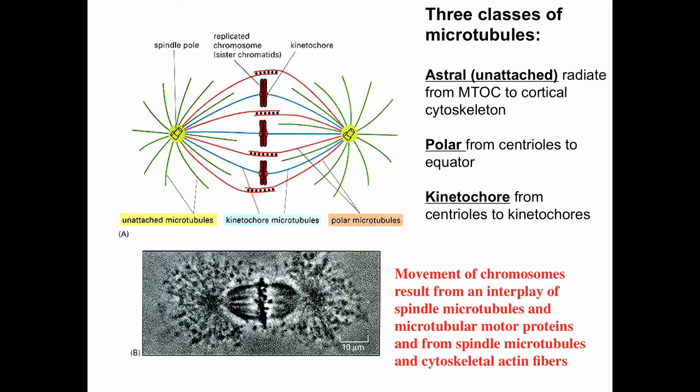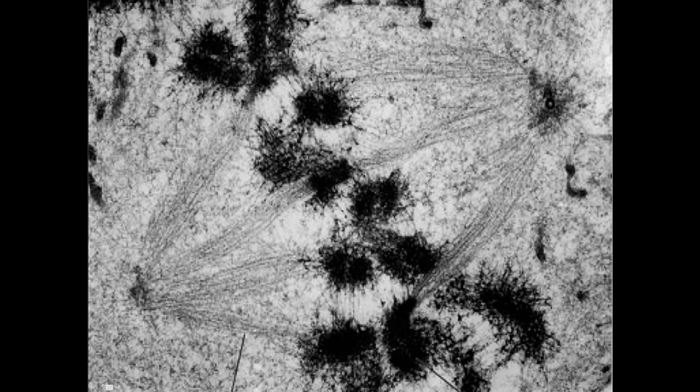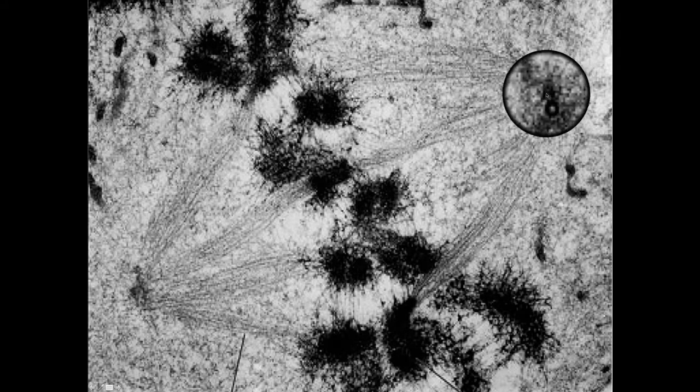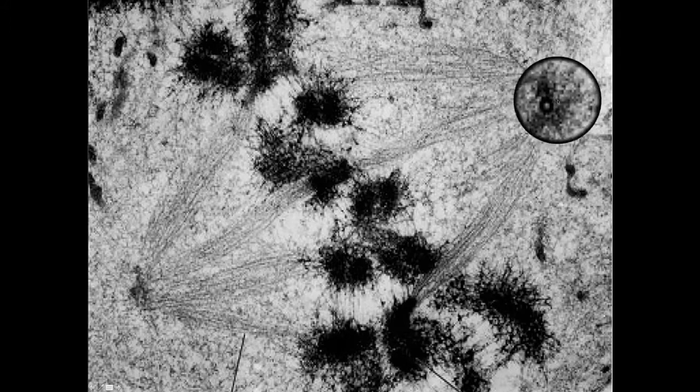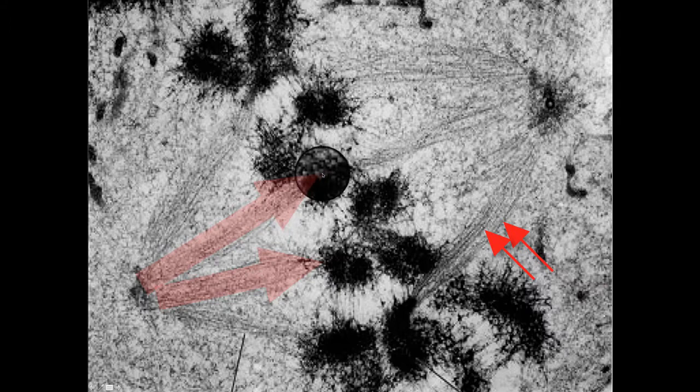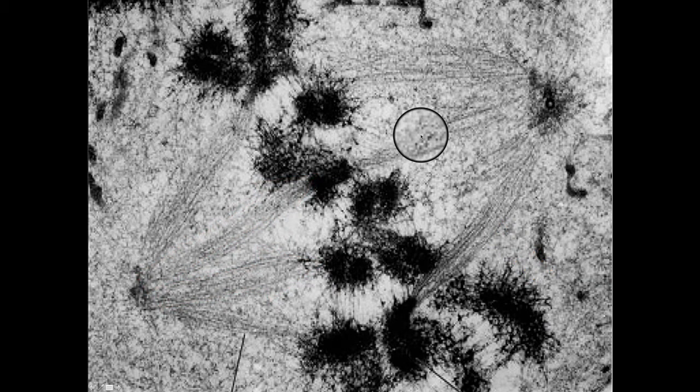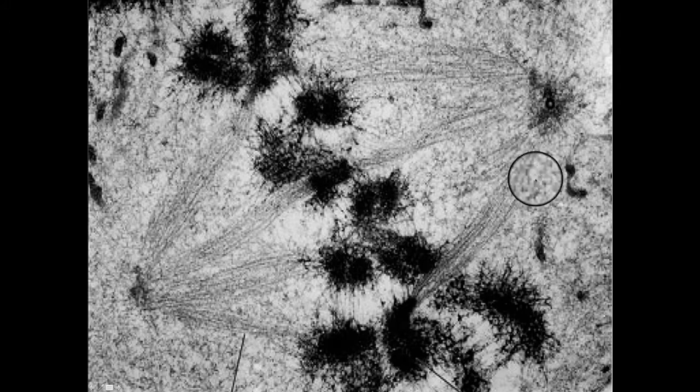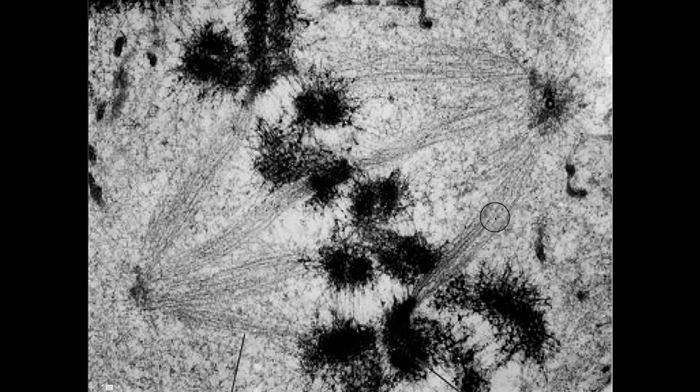Movement of chromosomes results from an interplay of spindle microtubules and microtubular motor proteins and from spindle microtubules and cytoskeleton actin fibers. This micrograph shows the spindle poles. You can actually see a cross section and longitudinal section of one of the pairs of centrioles and the microtubules going towards the kinetochores and chromosomes. It's clear there are multiple microtubules attaching to each kinetochore on each chromosome.